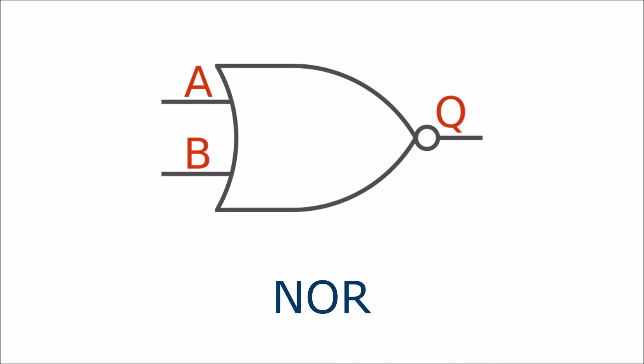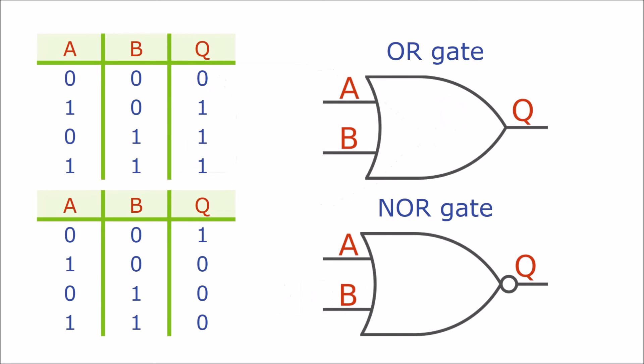Comparing the truth table you can see that the output is inverted compared to the OR gate. Reading down the output column the OR gate shows 0, 1, 1, 1. The NOR gate gives 1, 0, 0, 0, the exact opposite.